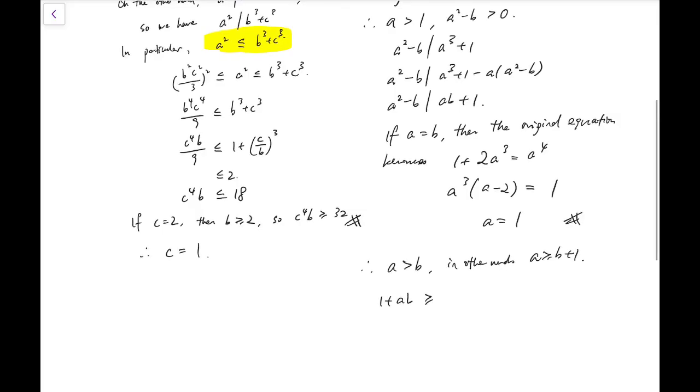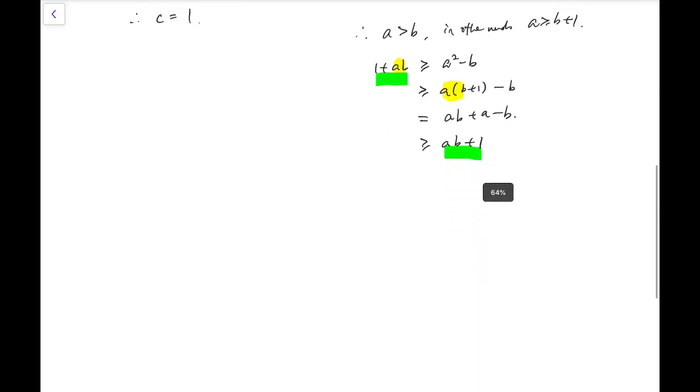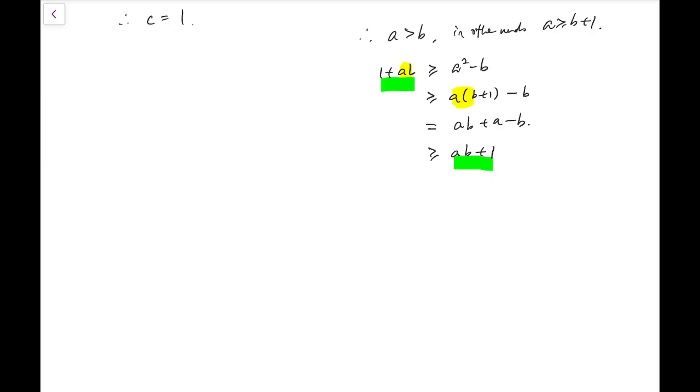Or I can say a is at least b plus 1. Now, because 1 plus ab is divisible by a squared minus b, I can say 1 plus ab is greater than or equal to a squared minus b. And I can rewrite this into a times b plus 1 minus b, to create some form of ab here that I can reduce that later on. That is equal to ab plus a minus b. And we know that a minus b is actually at least 1. So we realize that after doing all those bounds, the upper bound and lower bound are the same. So equality holds all the way in between. Equality, equality, and equality here. So therefore, I actually have a equals b plus 1.